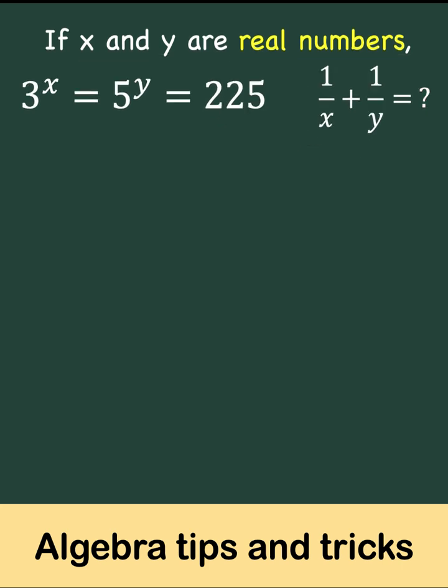Let's begin by writing this as two separate equations. 3 raised to x equals 225 and 5 raised to y equals 225. Then we can get the natural logarithm of both sides.